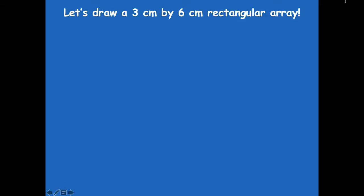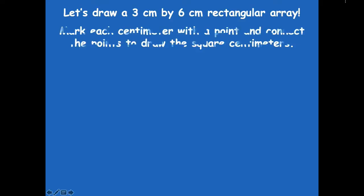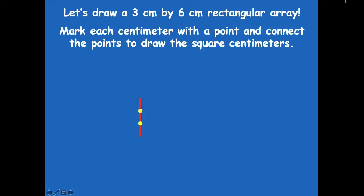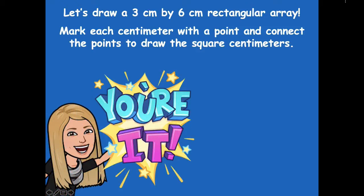Let's take one of those. We're going to draw a 3 centimeter by 6 centimeter rectangular array. You're going to mark each centimeter with a point and connect the points to draw the centimeters. Take your ruler and draw the first side up and down for 3 centimeters, then mark a point on that line at each centimeter. Then draw your 6 centimeters across the top, mark a dot at each centimeter, and connect those dots. We're basically making our square tiles inside the rectangle. Pause the video, draw your 3 by 6 centimeter rectangle all the way around, and click play when you're ready.